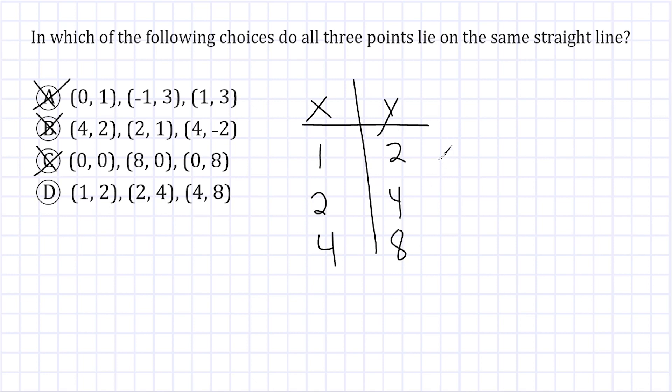With the first pair of points, we go from 2 to 4, which is an increase of 2. And the corresponding x's increase by 1. So that would be a rate of change of 2 to 1. And for the next pair of points, we go from 4 to 8, which is an increase of 4. And from 2 to 4 is an increase of 2, which would be a rate of change of 4 to 2.